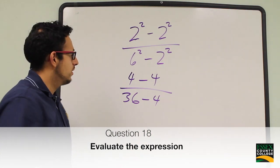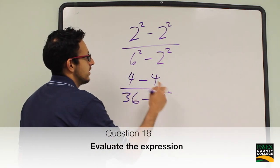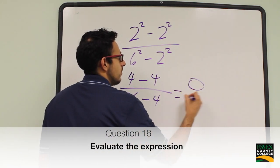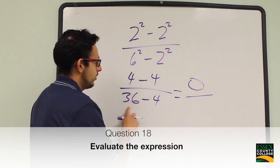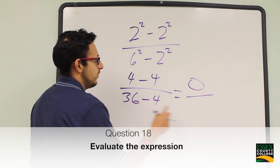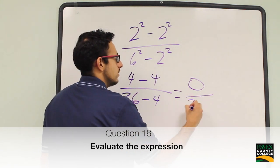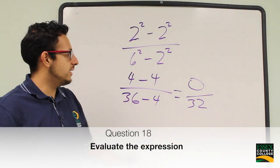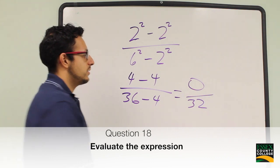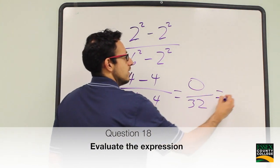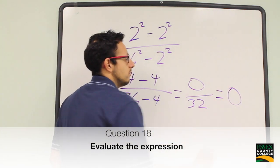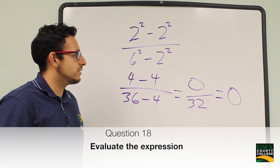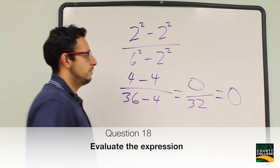Now we simplify. 4 minus 4 is 0. 36 minus 4 is 32. So 0 divided by any number is simply 0. So the answer is B.